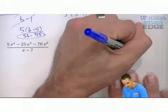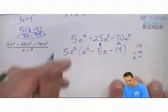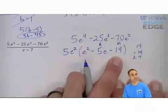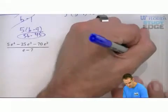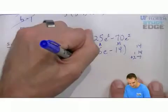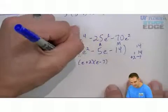What multiplies to negative 14 and adds to negative 5? Factors of 14 would be 1 and 14, 2 and 7, and I think that might work. If it's negative, that means one's got to be positive and one's got to be negative. Since I have a negative 5, the bigger number has got to be negative. So e plus 2, e minus 7, but we already knew it had to be e minus 7.